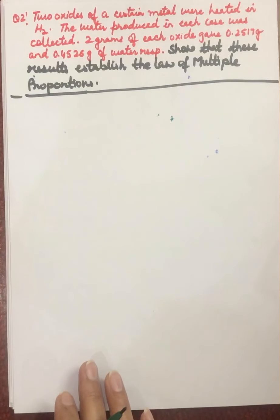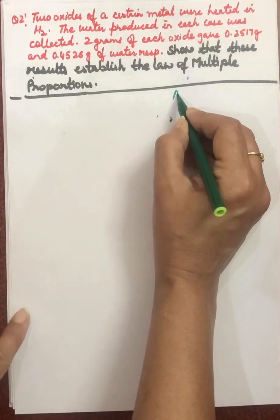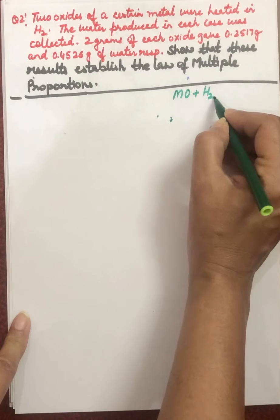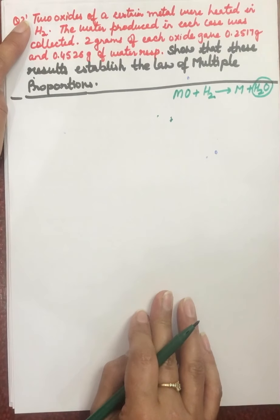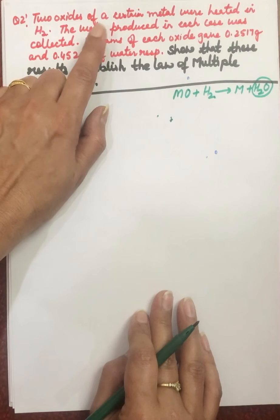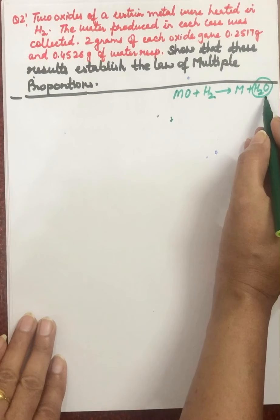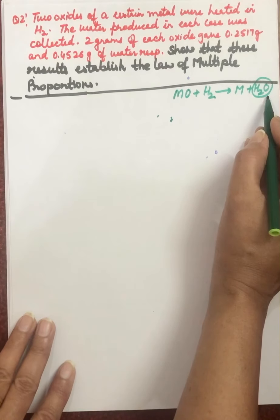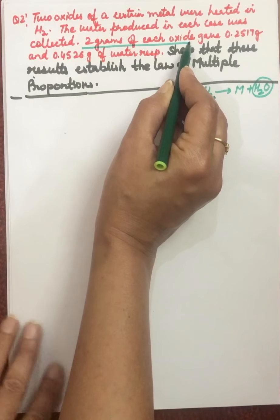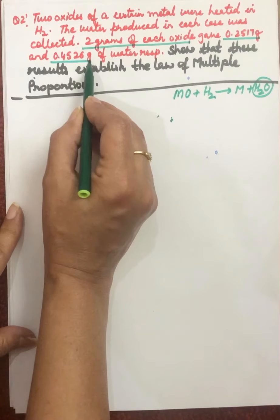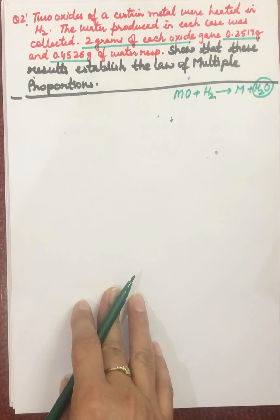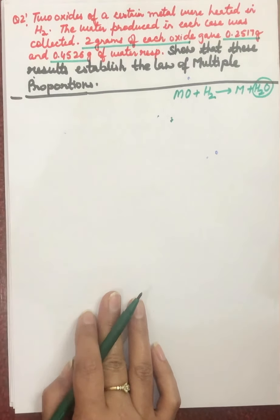Two oxides of a certain metal are heated in hydrogen. When a metal oxide is heated with hydrogen, we get the metal and water. Two different metal oxides are heated in hydrogen separately, and the water produced in each case is collected. Taking 2 gram of each oxide every time, the first gives a certain amount of water and the second gives another amount.